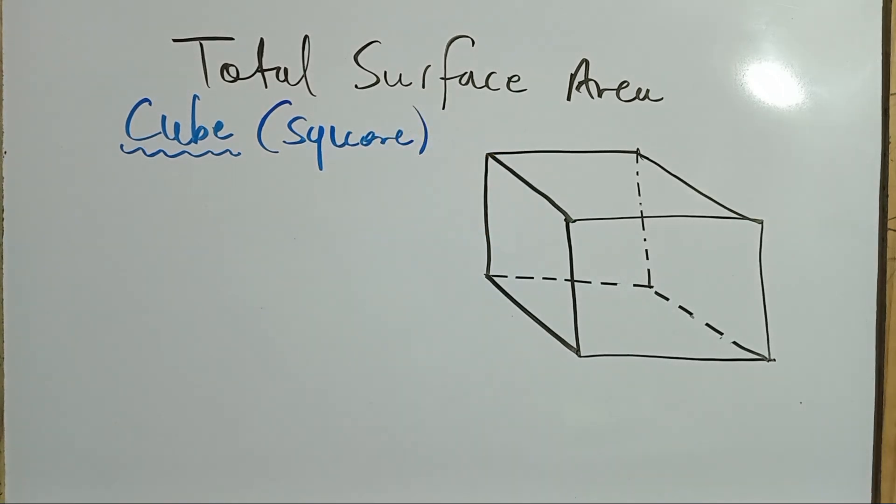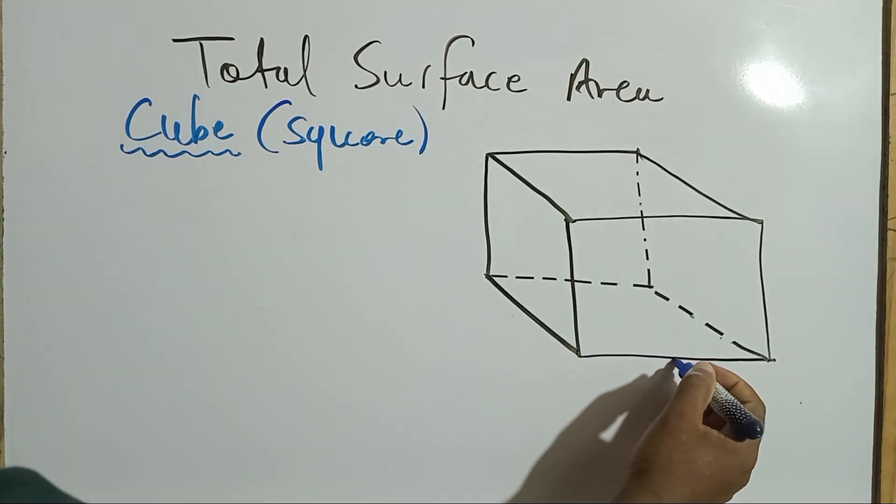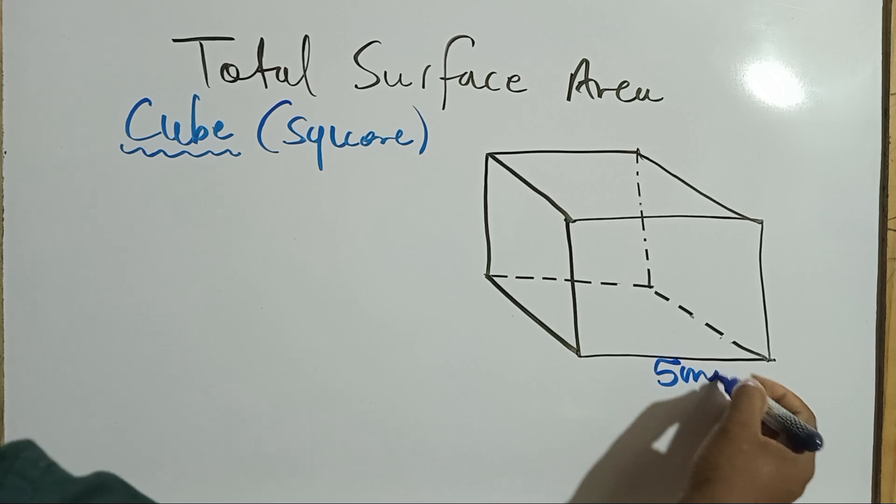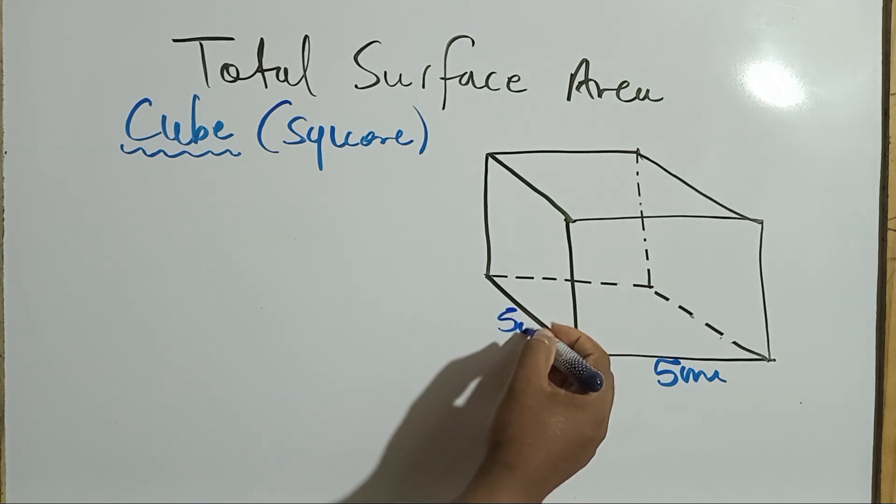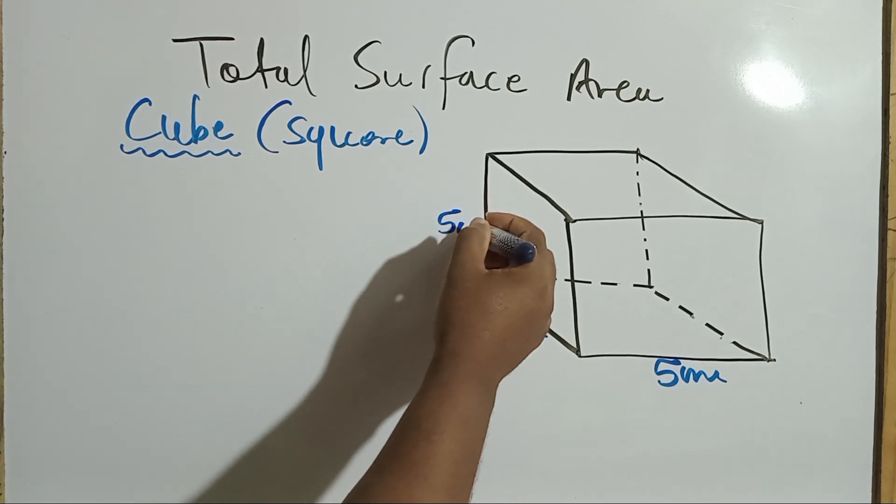All right, let us say this measurement would have been five centimeters, and you wanted to find the total surface area. Now, because it's a square, all the sides are going to be five, because a square has sides equal.